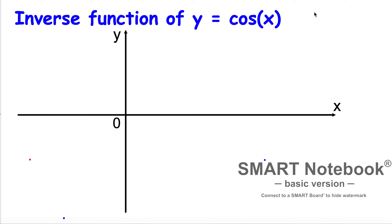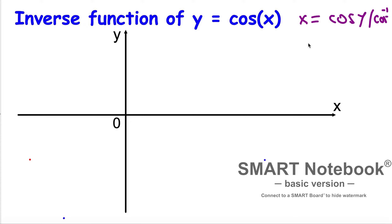We start with y is equal to cosine x. Let's try analytically: whenever there is a y, I am exchanging it with x, and whenever there is an x, I am exchanging it with y. So x is going to be equal to cosine y. Now I am taking the inverse of cosine on both sides. This gives us inverse cosine of x is equal to inverse cosine times cosine of y.